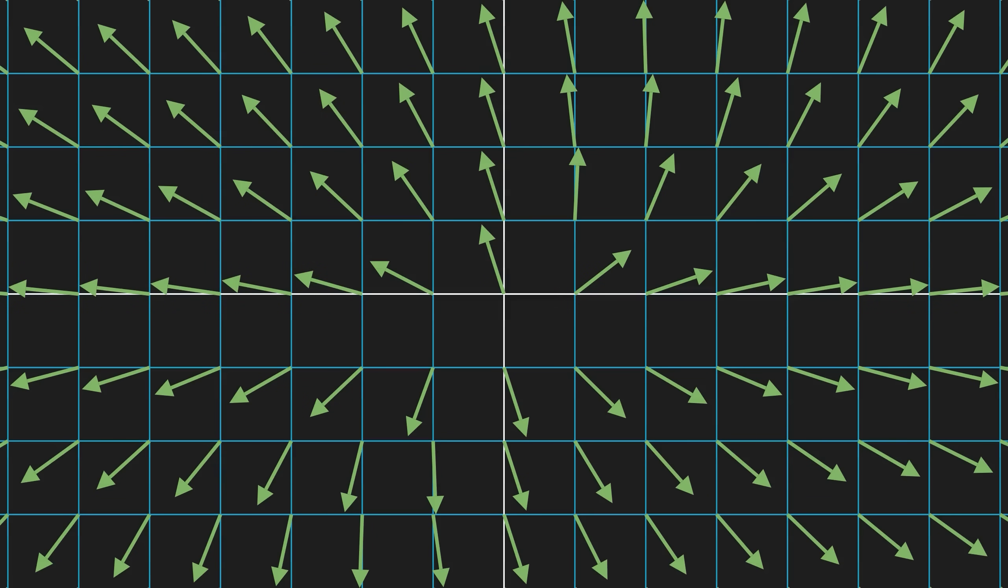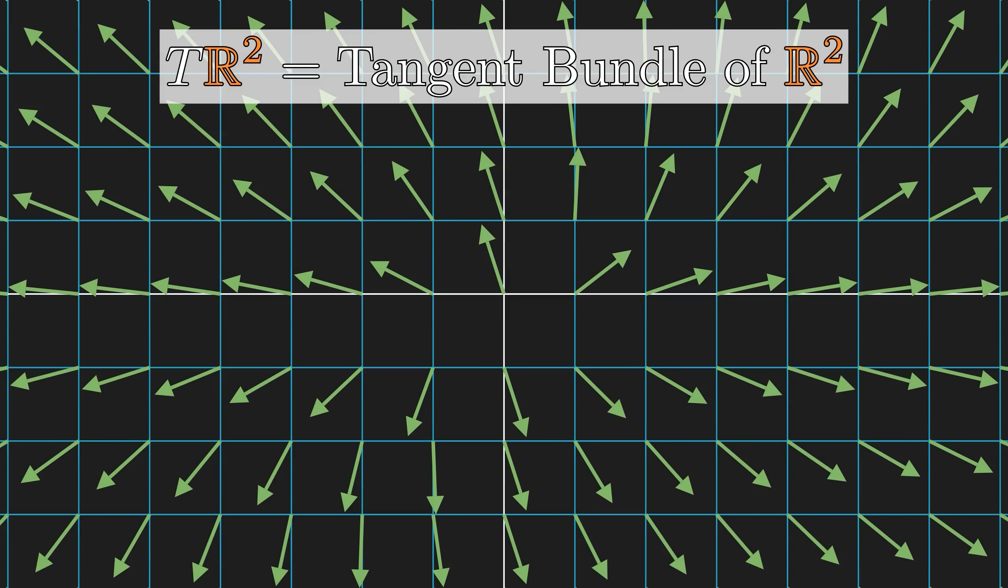Now, back to our plane, the space of all possible tangent vectors is called the tangent bundle. To describe an element on the tangent bundle, we need two pairs of coordinates, one pair to specify a point in space, and a second pair to describe the direction of the vector. This means the tangent bundle is a four-dimensional manifold.